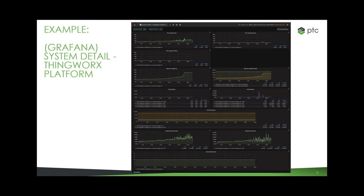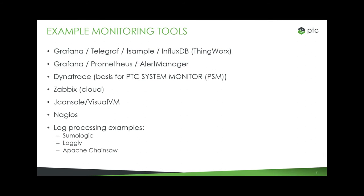This is an example of a ThingWorx evaluation dashboard in Grafana. This looks at the ThingWorx platform system detail and all the various factors for resource utilization during the test. Some of the monitoring tools we use currently and have used in the past include the following: Grafana with either Telegraf or with Prometheus and Alert Manager feeding into InfluxDB; Dynatrace, the AppMon product, as the basis for our PTC System Monitor, and the Dynatrace cloud product going forward; Zabbix for cloud monitoring. We've also used JConsole, VisualVM, Nagios, and Apache Chainsaw, and we're also looking at tools for Kubernetes such as Sumo Logic and Loki.